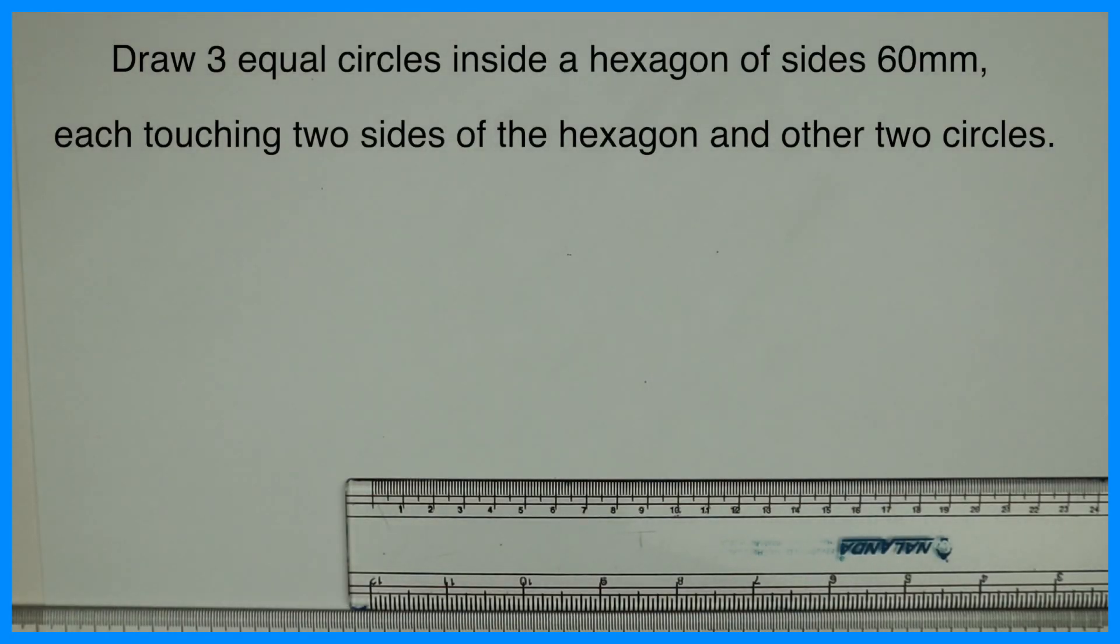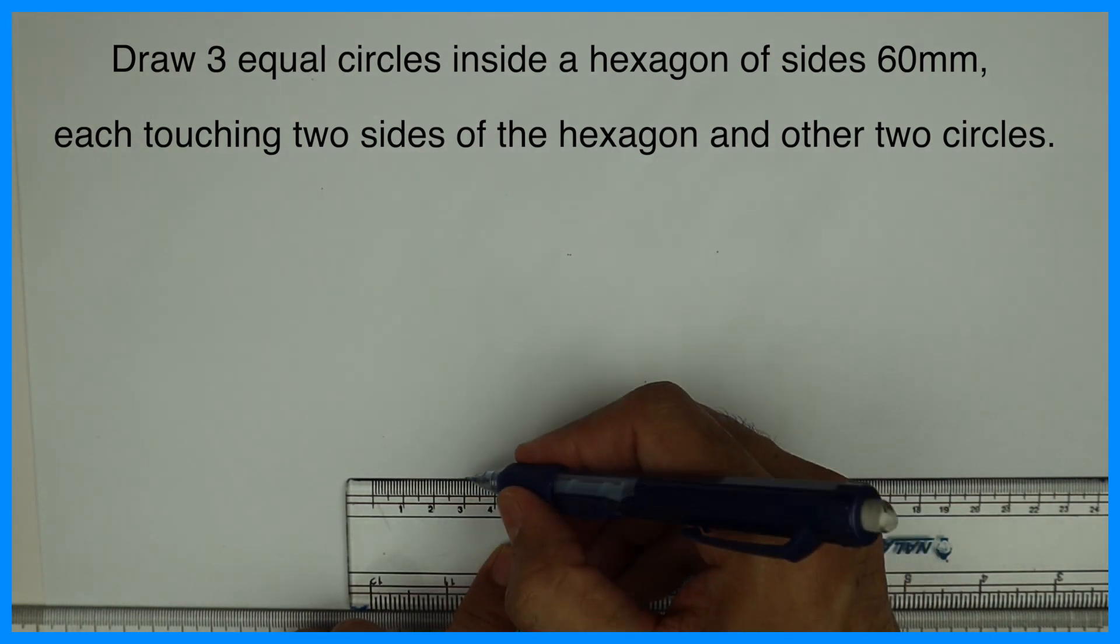Welcome to technical drawing. Today we are going to draw three equal circles inside a hexagon of side 60mm, each touching two sides of the hexagon and other two circles.